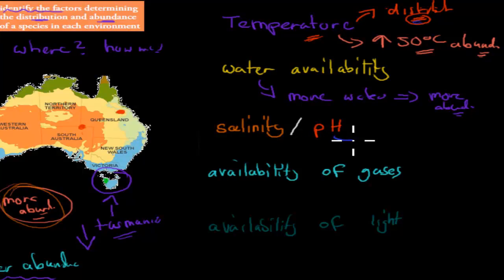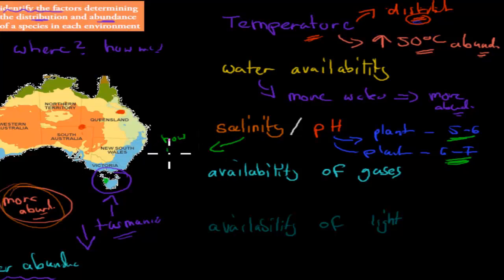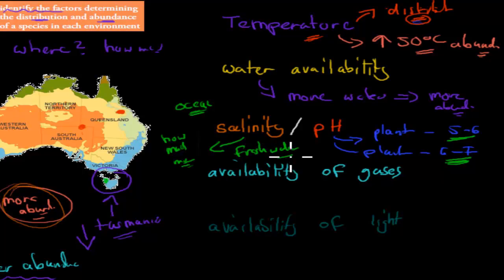Salinity and pH also matter. Some plants prefer a pH of about 5 to 6, others prefer around 6 to 7, so you're only going to find those plants best adapted to those pH levels in those given areas. Salinity refers to how much salt there is. In the ocean you find salt-tolerant marine fish, whereas non-salt-tolerant fish are found in freshwater areas. Salinity affects what kind of animals you can find — their distribution.